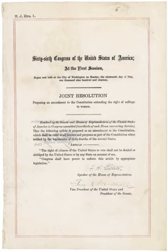Article 5 provides two methods for amending the nation's frame of government. The first method authorizes Congress, "whenever two-thirds of both houses shall deem it necessary" — a two-thirds of those members present, assuming that a quorum exists at the time that the vote is cast, and not necessarily a two-thirds vote of the entire membership elected and serving in the two houses of Congress — to propose constitutional amendments.